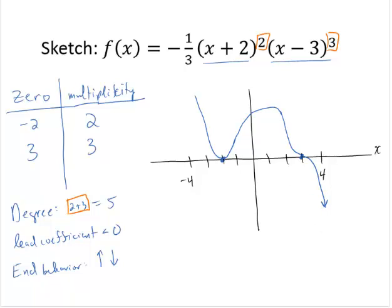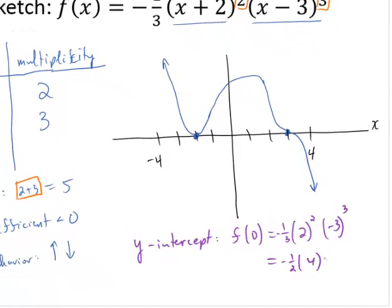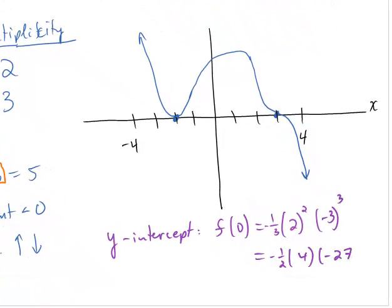So there's a rough sketch of the curve. We might also want to know, what is the y-intercept? Well, to find the y-intercept, we evaluate f of 0. And so that would be negative one-third times 0 plus 2, so that's 2 squared, times 0 minus 3, so that's negative 3 cubed. And so that would be negative one-third times 4 times negative 27.